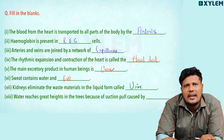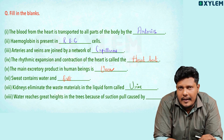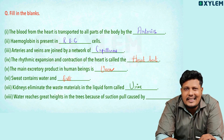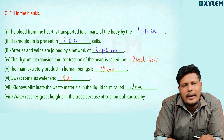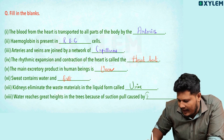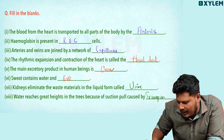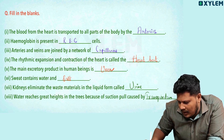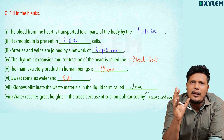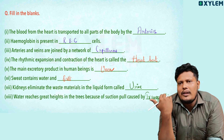Water reaches great height in a tree because of the suction pull caused by transpiration. So transpiration is the answer.